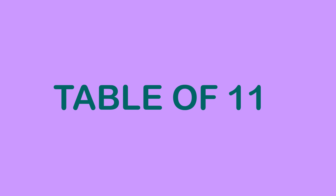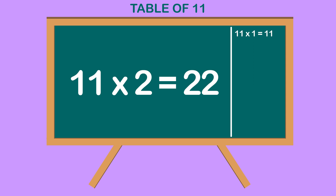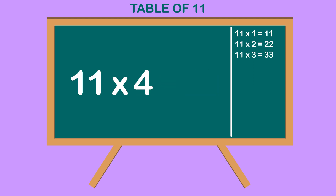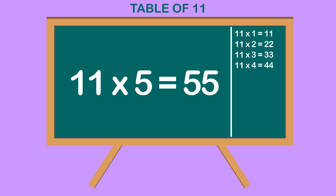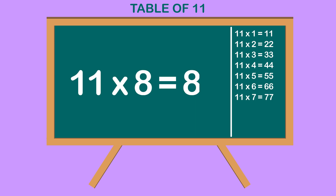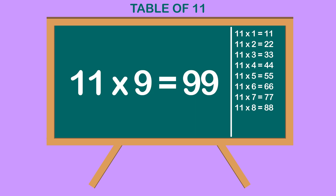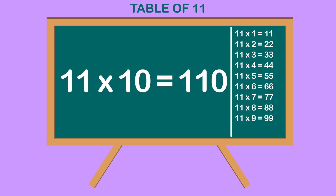Table of 11. 11 1s are 11. 11 2s are 22. 11 3s are 33. 11 4s are 44. 11 5s are 55. 11 6s are 66. 11 7s are 77. 11 8s are 88. 11 9s are 99. 11 10s are 110.